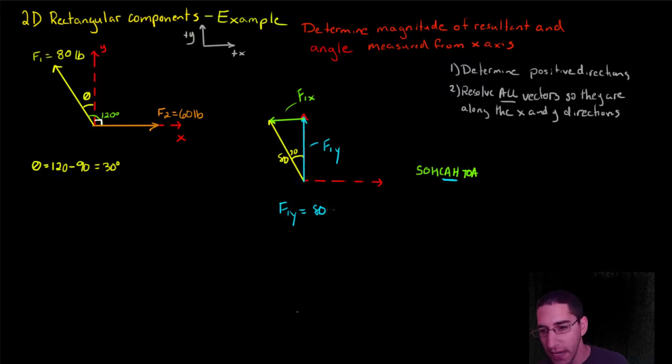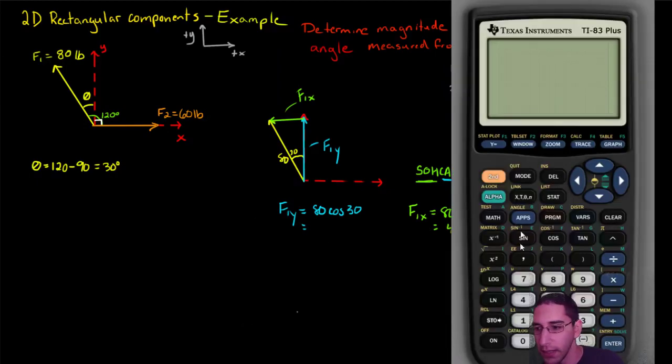But F1y is the adjacent and the hypotenuse. We're going to need to use the cosine. So it's going to be 80 times the cosine of 30. F1x is going to be 80, we're on the opposite side, so it's going to be the sine. So the sine of 30. This will come to a 40. And this will be 80 times the cosine of 30. 69.3.